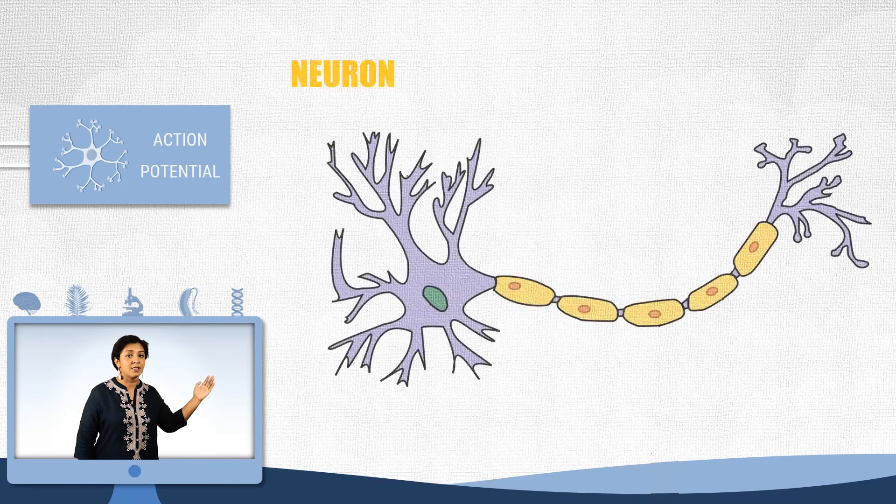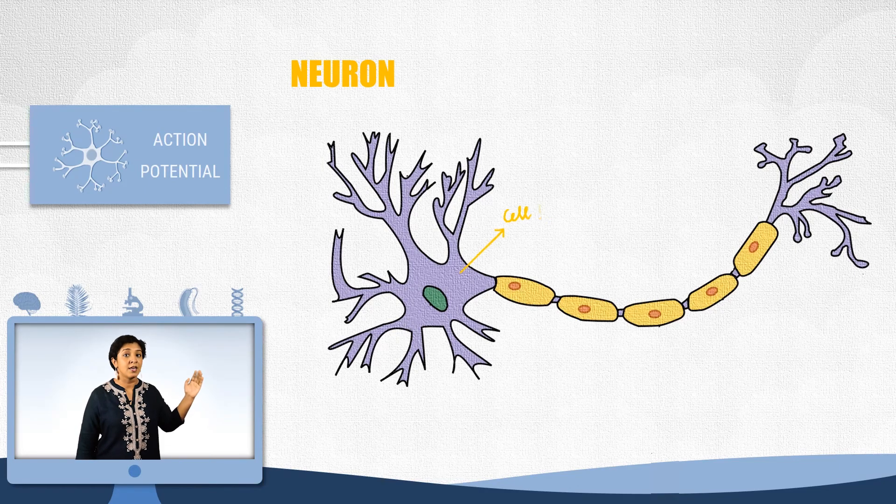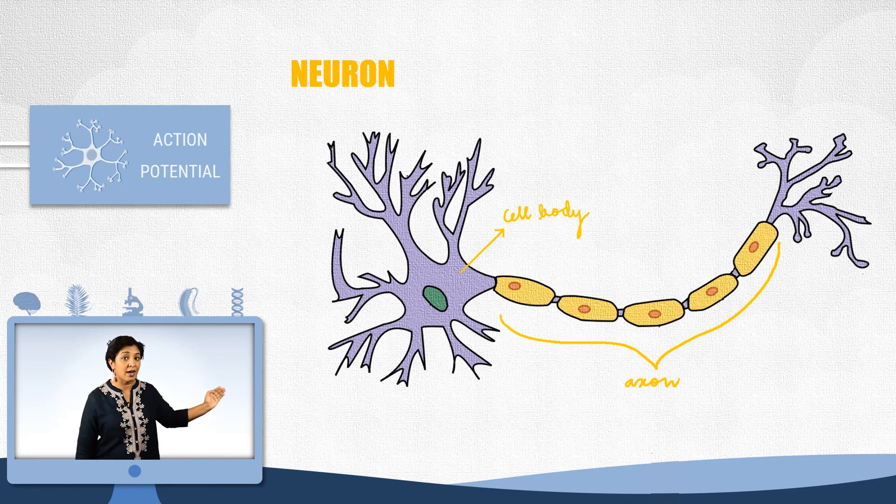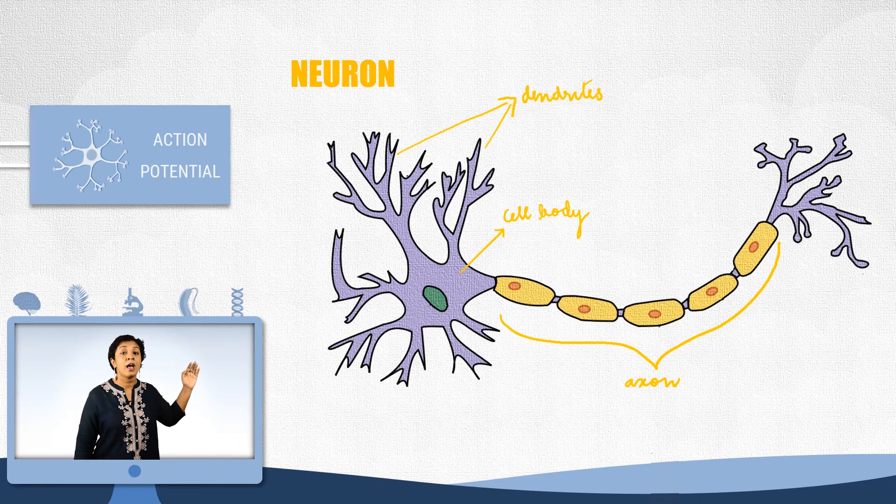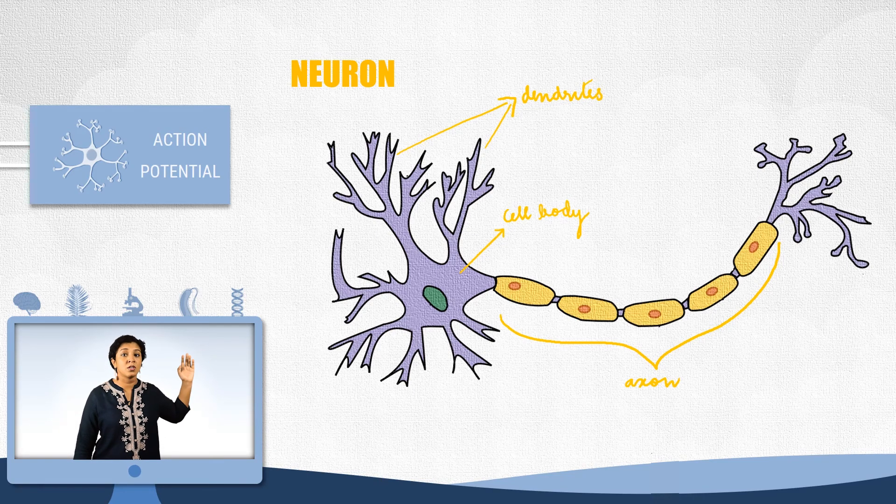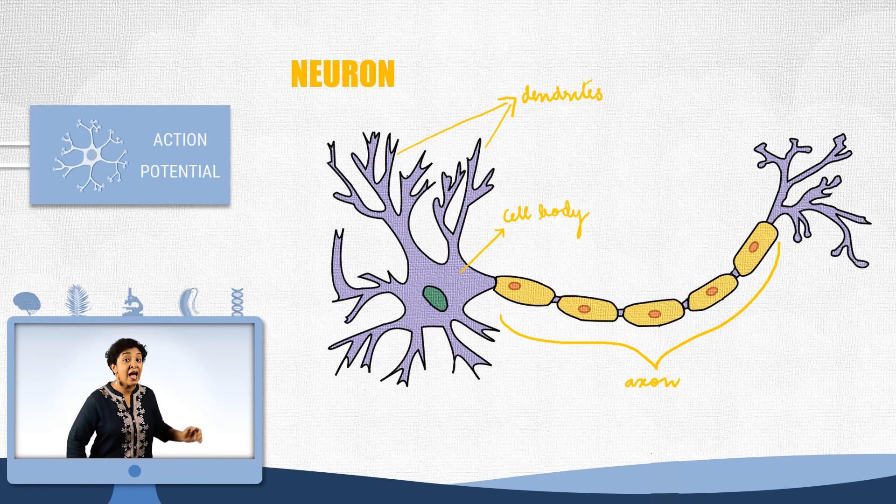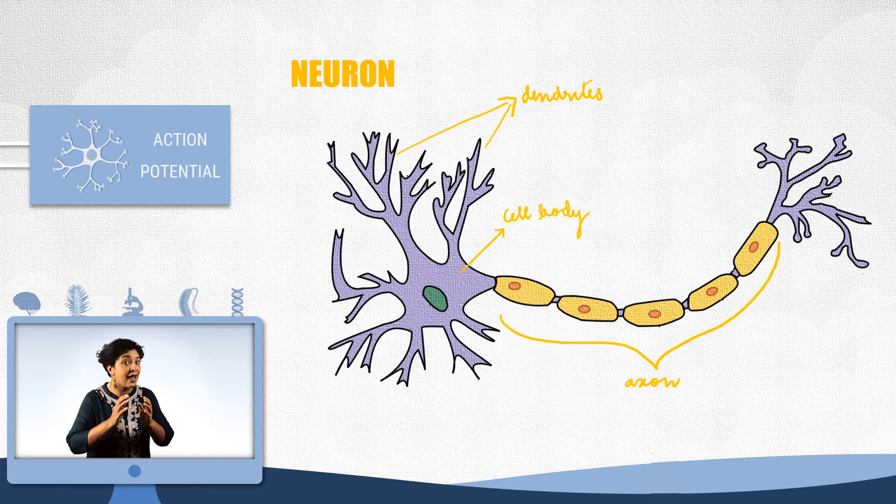What you see here is the brain cell or a neuron. It has a cell body, a long axon that transmits messages and a lot of these short processes known as dendrites. Now let us see how one of these cells produce electricity.